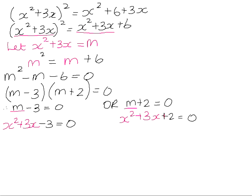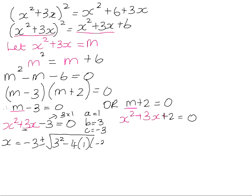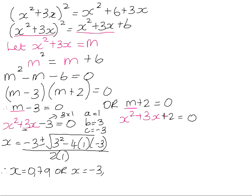Now we need to factorize. x squared plus 3x minus 3 sadly doesn't factorize, because 3 times 1 is the only pair of factors for 3 and they don't add up to 3. So we'll use the quadratic formula. Our coefficients: a is 1, b is 3, and c is negative 3. The formula gives x equals negative b plus or minus the square root of b squared minus 4ac, all over 2a. Pause the video and try this on your calculator. You should get x equals 0.79 or x equals negative 3.79.